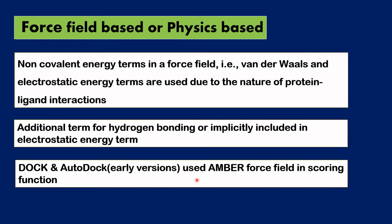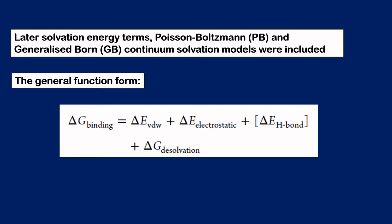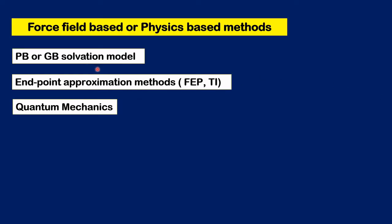The earlier versions of DOCK and AutoDock used the AMBER force field in their scoring function. As more developments were made, additional solvation terms like the Poisson-Boltzmann and the generalized Born continuum solvation models were also included in addition to the force field non-covalent energy terms. So the general functional form can be taken as a sum of Van der Waals interactions, electrostatic interactions, hydrogen bonding, and desolvation interactions. Apart from that, the PB or GB solvation model, point approximation methods, and quantum mechanics terms are also included. Because they use non-covalent parameters alongside solvation models and quantum mechanics, they are also known as physics based methods.